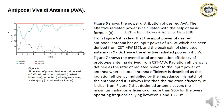The formula is: ERP = input power × antenna gain (in dB). From Figure 6, it is clear that the SAR antenna has an input power of 0.5 W derived from CST MWS, and the simulated antenna speed gain is 9 dBi; hence the effective radiated power is 4.5 W.